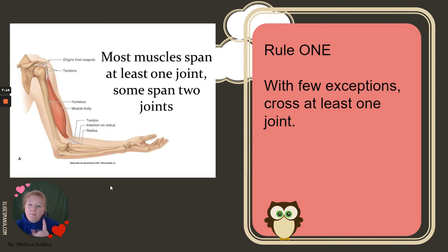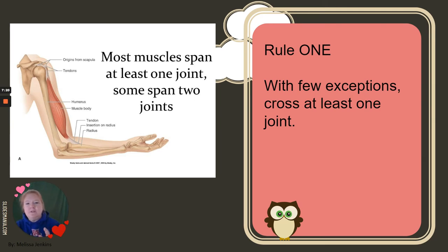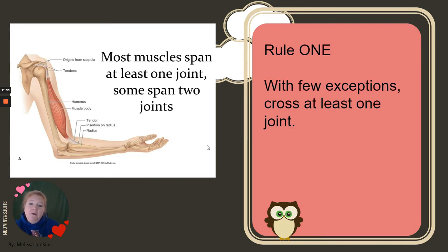Rule number one: with just a few exceptions, skeletal muscles cross at least one joint. As you can see in this picture, here is the biceps brachii muscle, and here is the joint at the elbow that the muscle is crossing.